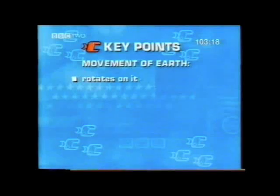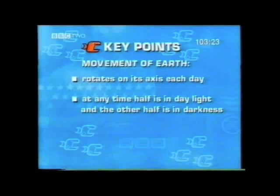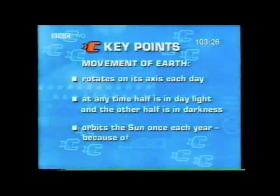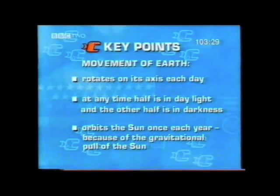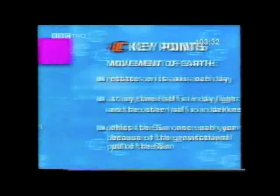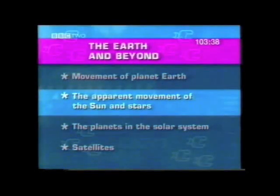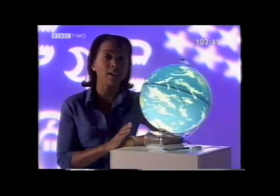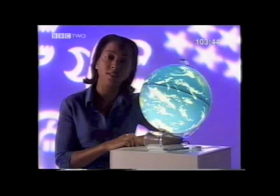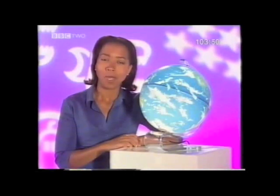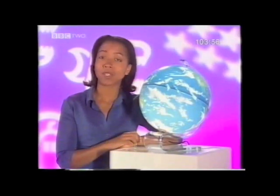The Earth rotates on its axis once each day. At any time, half of the Earth is in daylight and the other half is in darkness. The Earth orbits the Sun once each year, due to the gravitational pull of the much larger Sun. During the night, the stars appear to move across the sky, and during the day the Sun also appears to move across the sky. But we now know that both the Sun and the stars' apparent daily movement is because of the Earth's constant rotation about its axis.